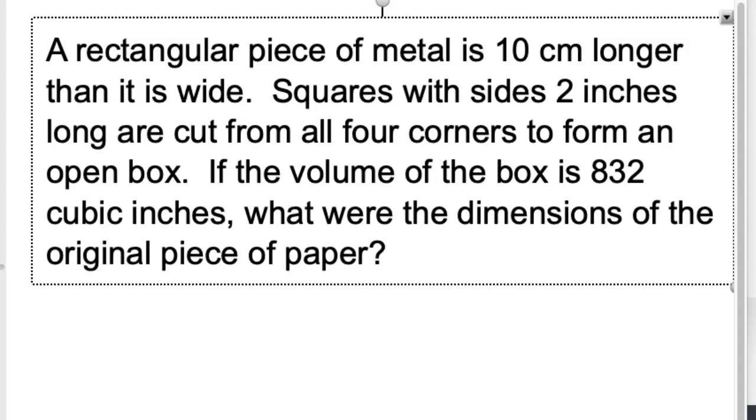Okay, the audio on this might be really bad, but we'll try it. A rectangular piece of metal is 10 centimeters longer than it is wide. Squares with 2-inch sides, 2 inches long, are cut from all four corners to form an open box. If the volume of the box is 832 cubic inches, what were the dimensions of the original piece of paper?